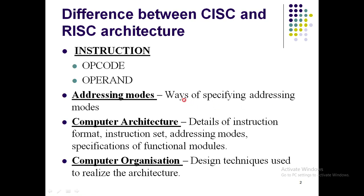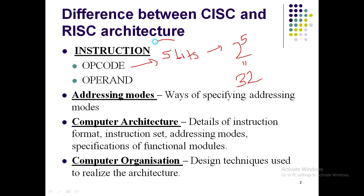The opcode is very important because based on it you can decide the range of operations. For example, if I reserve 5 bits for the opcode, I can perform at most 2 raised to 5, which is 32 operations. So the opcode length tells us the range of possible operations. The operand, as we saw, is the data on which the operation is carried out. With this, the concept of an instruction is clear.